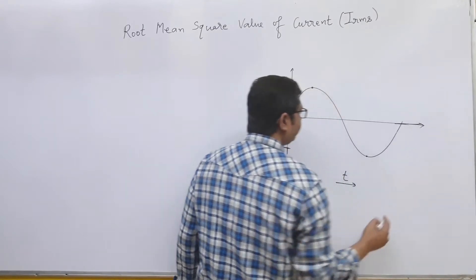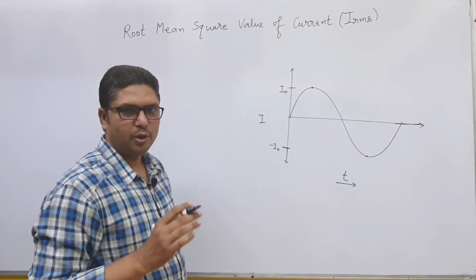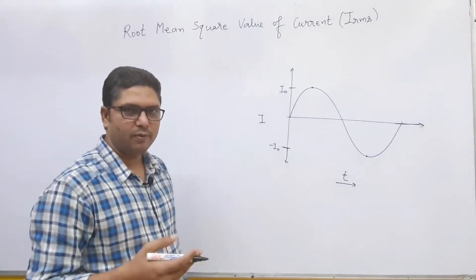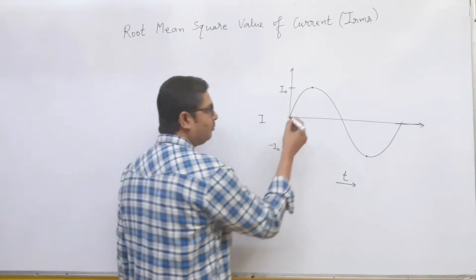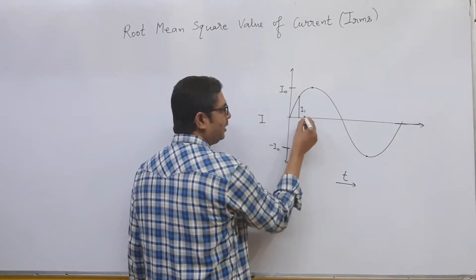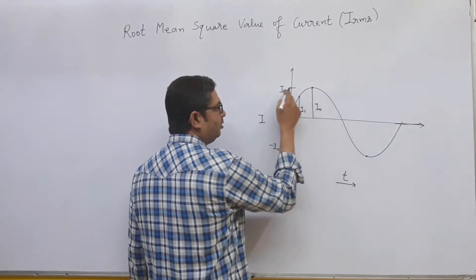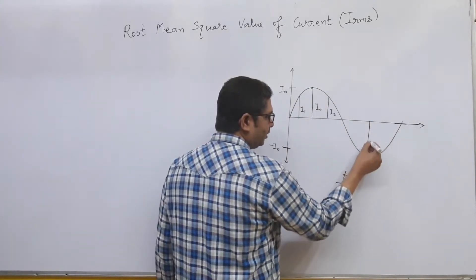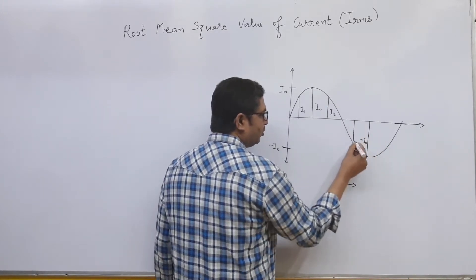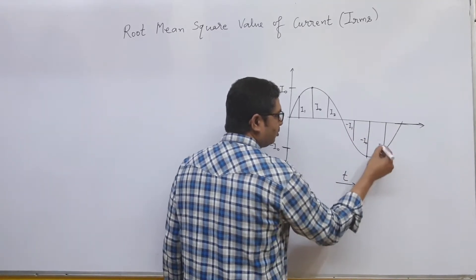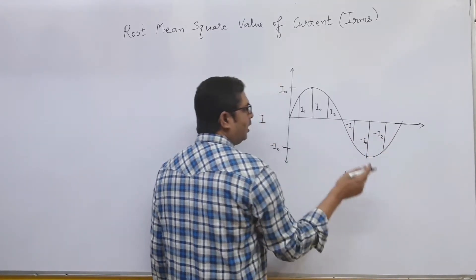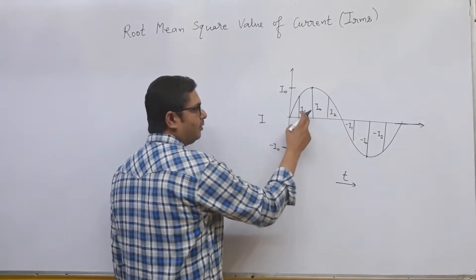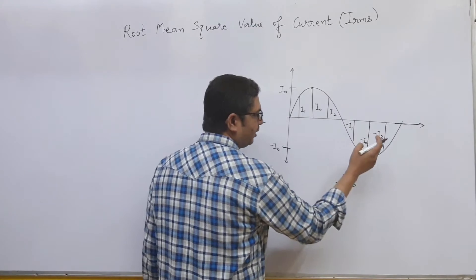Now in this graph we have marked what is peak current. Now you must know the concept of root mean square value of current. For explaining this concept I am taking some perpendicular lines: let this line be I1, this is I₀, this equals I3, and so on. Similarly on the negative side we have minus I₀, minus I1, minus I2, and so on.